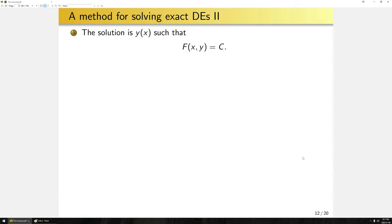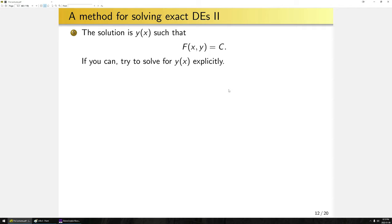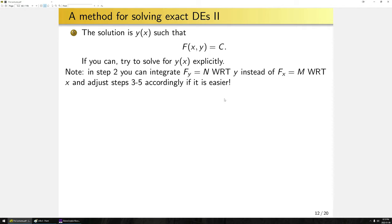Generally speaking, and for this course, you should solve for y of x explicitly if you can. If it's a nice expression, I will want you to solve it; if it's something like a cubic in terms of y, you can leave it as the implicit expression. Also note that in step two you can integrate n with respect to y instead of m with respect to x, adjusting the rest of the steps accordingly, if that is easier.